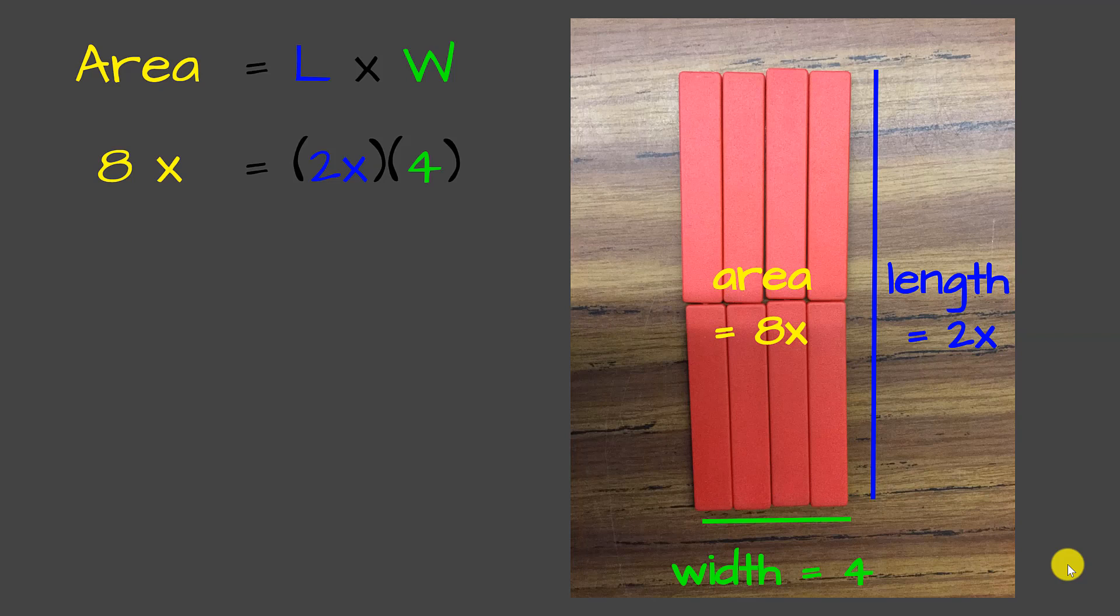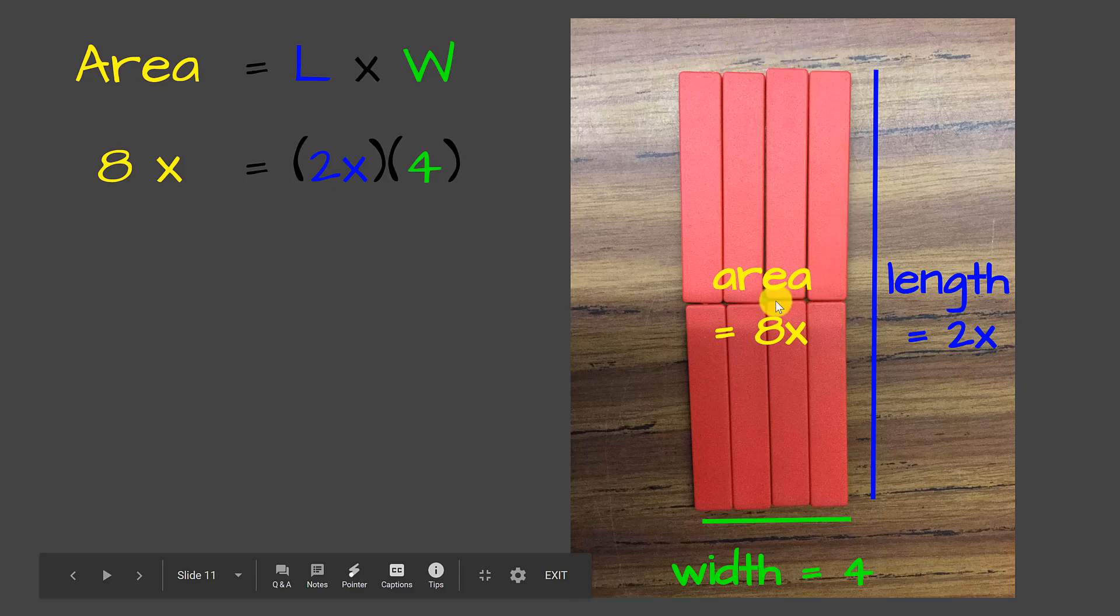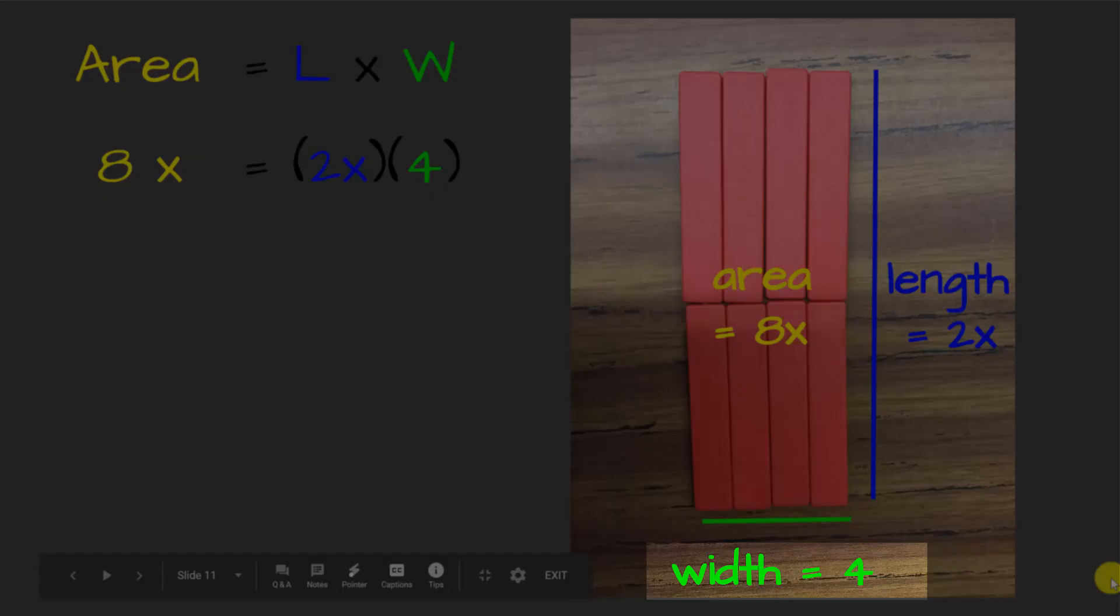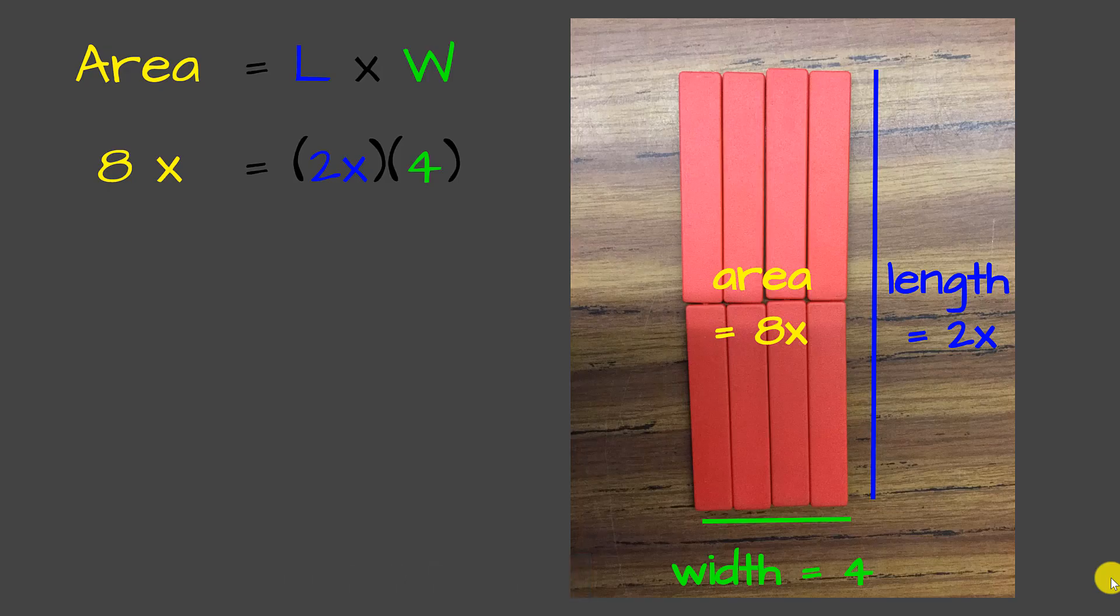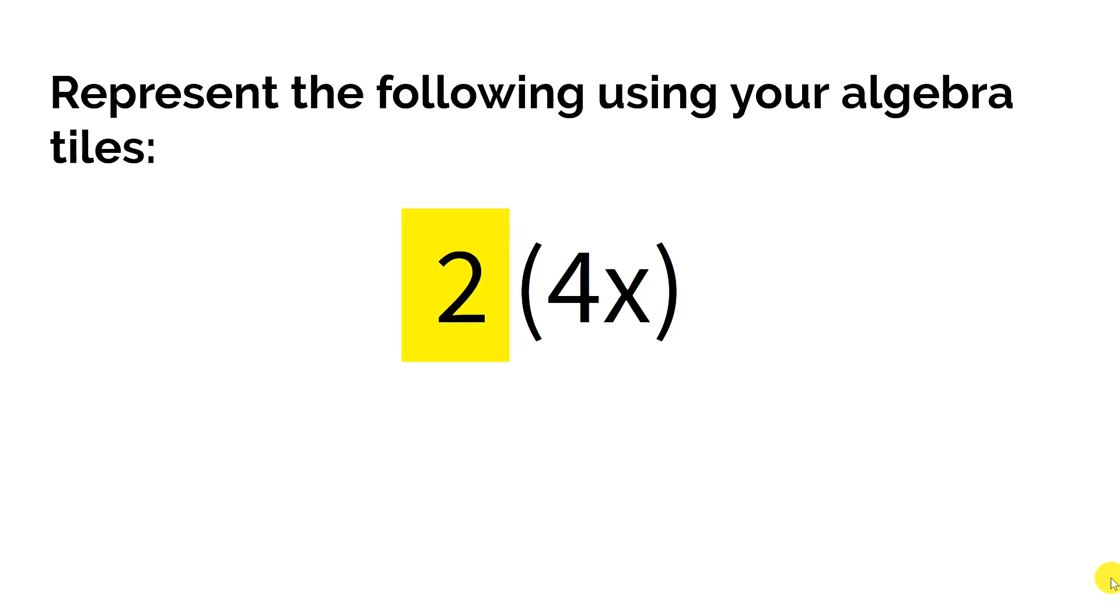Many students will build a rectangle like this. We can clearly see two groups of 4x, but students have put it into a rectangle that has a width of 4 and a length of 2x. You'll remember, we were looking for a width of 2 and a length of 4x.